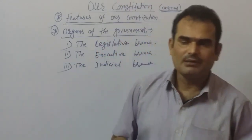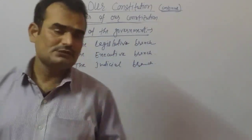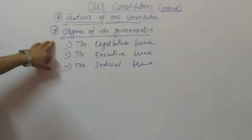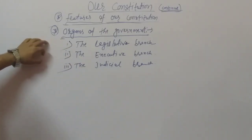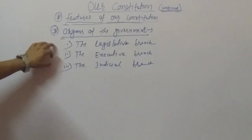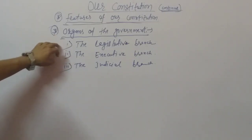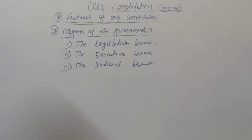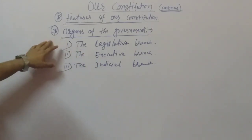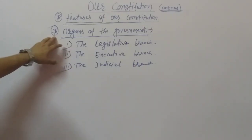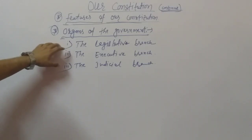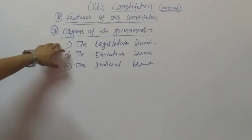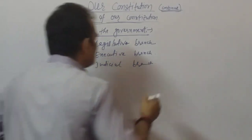The legislative branch includes the parliament and the state legislatures of the various states. So what we include here is the parliament and all state legislatures — together they form the legislative branch.